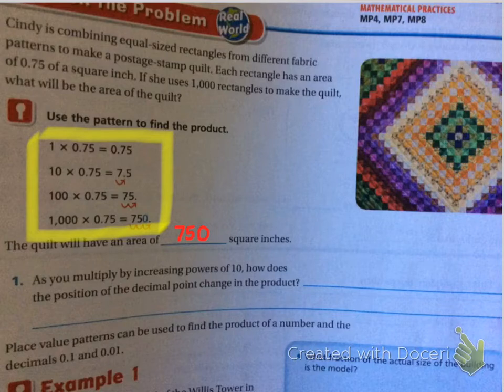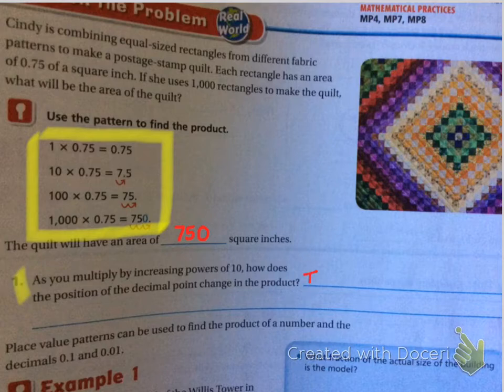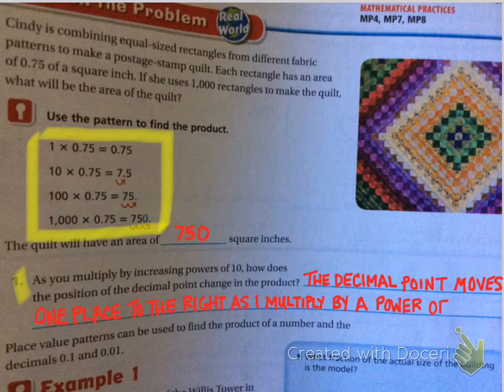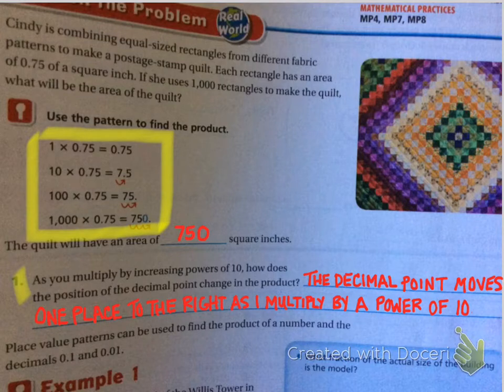After the example has been done at the very bottom, if you take 75 hundredths times 1,000, the quilt will have an area of 750 square inches. But what is the decimal doing every time? Question one asks: As you multiply by increasing powers of ten, how does the position of the decimal point change in the product? The decimal point moves one place to the right as you multiply by each power of ten. Because 1,000 has three zeros, I moved the decimal point three times to the right.